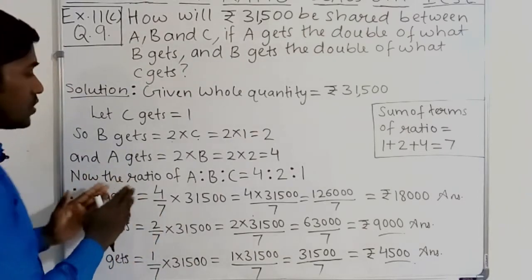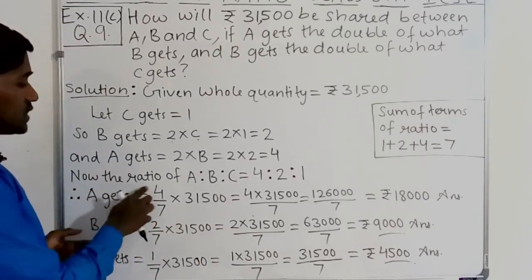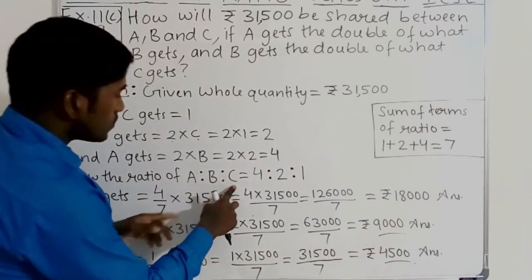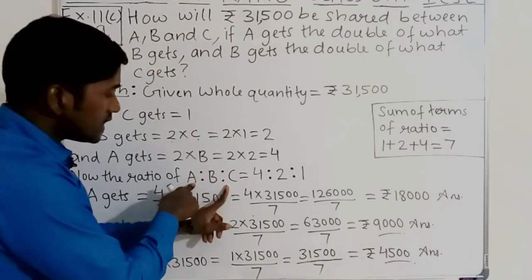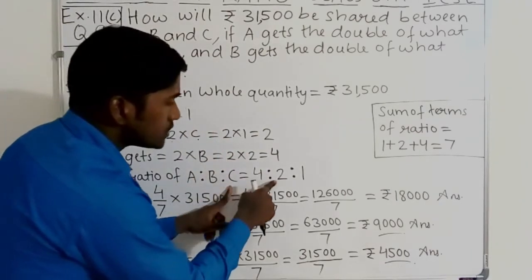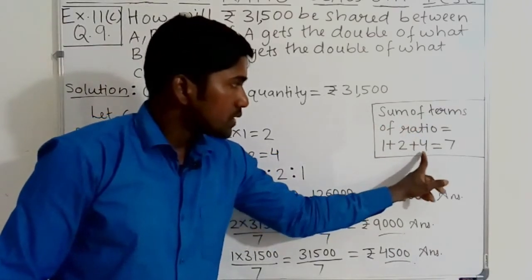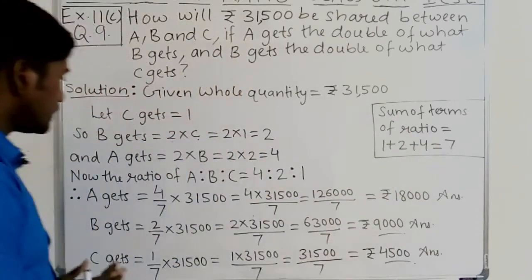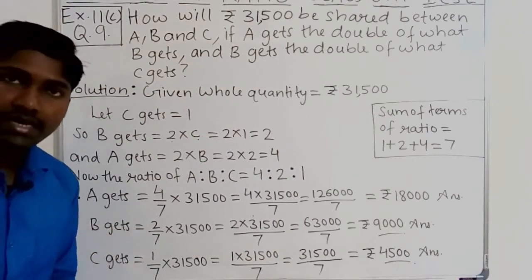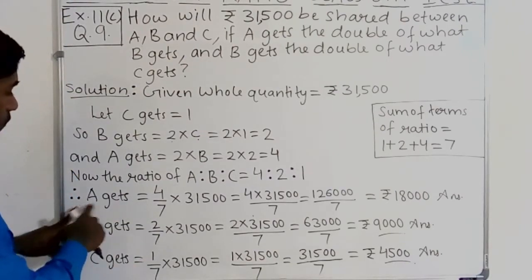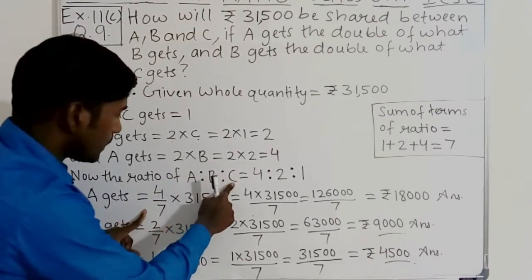Now we get the ratio of A to B to C. The ratio of A is to B is to C is equal to 4 is to 2 is to 1. The sum of the terms of the ratio is equal to 1 plus 2 plus 4, which is equal to 7. Now we will find how much A gets, how much B gets, and how much C gets.